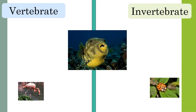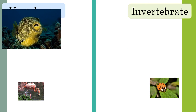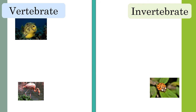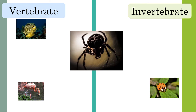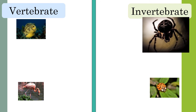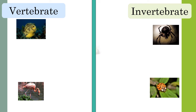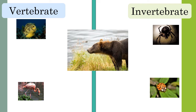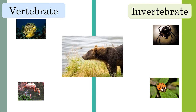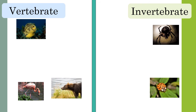Which group do fish belong to? Fish have backbones and belong to the vertebrate group. What about this spider? Like the ladybird, a spider has an exoskeleton and belongs to the invertebrate group. Which group does this bear belong to? A bear is a type of mammal and has a backbone — it belongs to the vertebrate group.